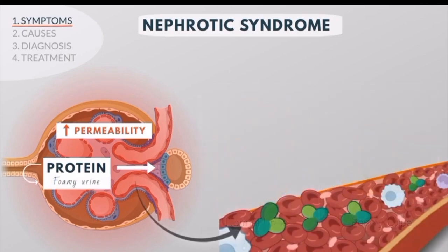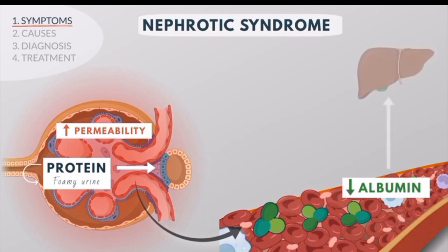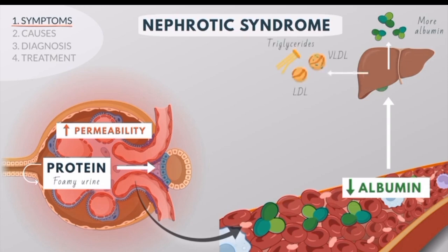Excessive protein excretion leads to low levels of protein in the blood. The liver tries to compensate for this protein loss by increasing the synthesis of albumin, but at the same time it also releases cholesterol, triglycerides, and LDL.